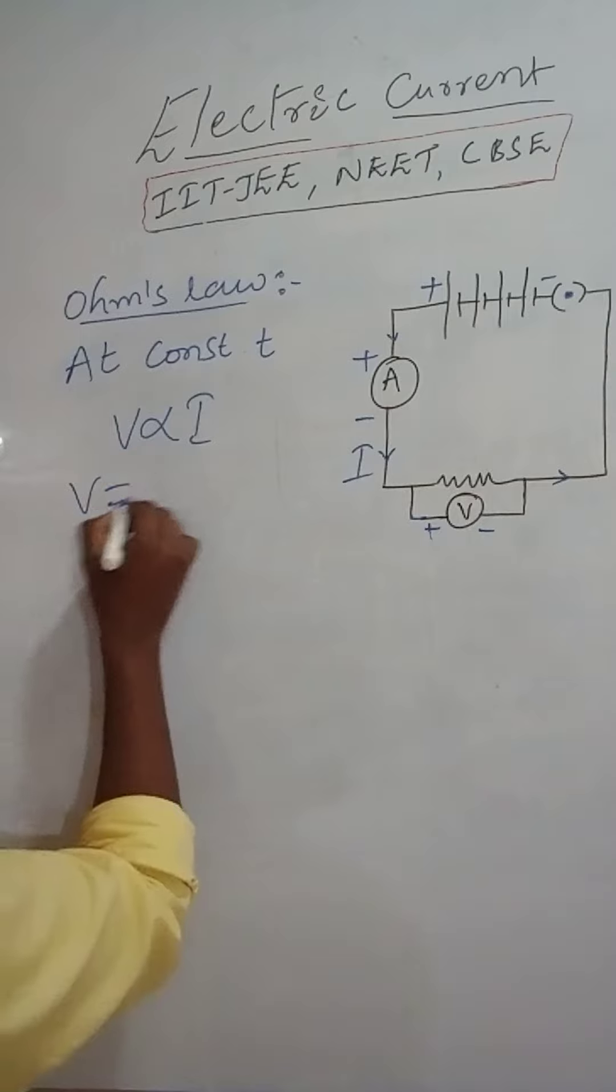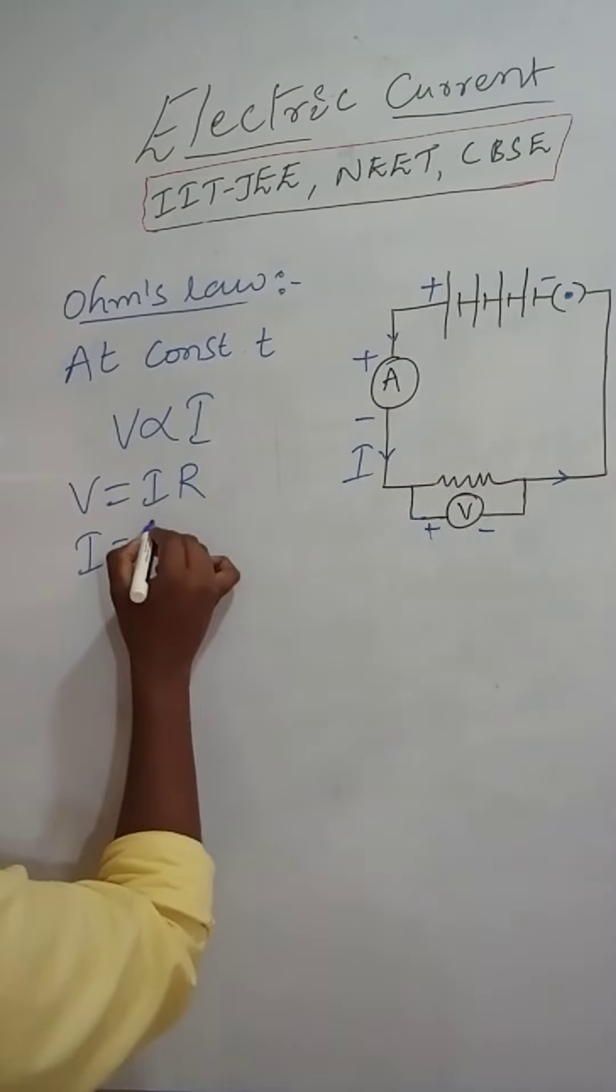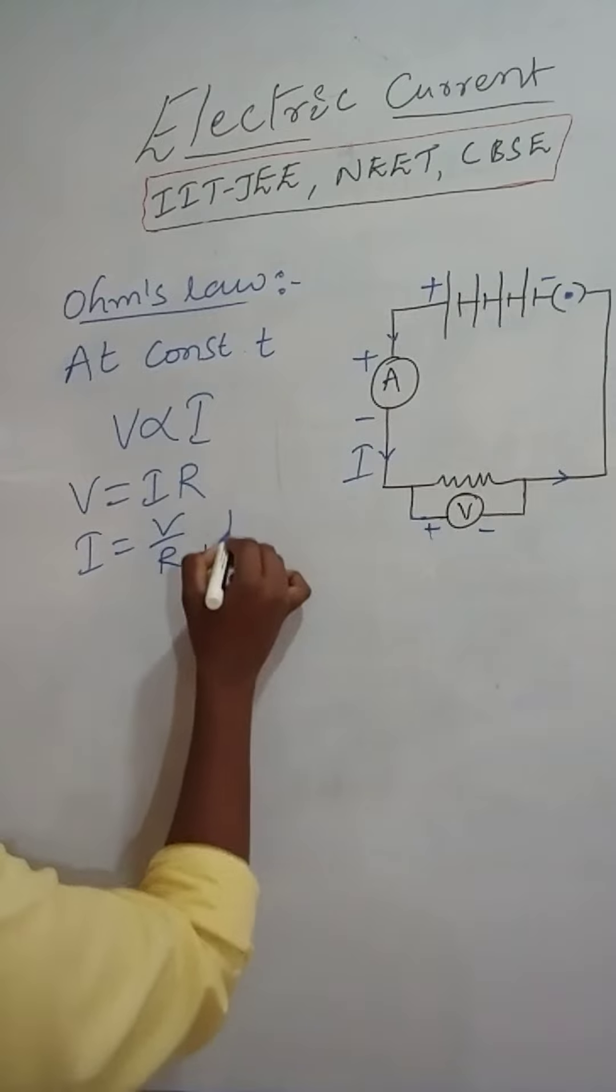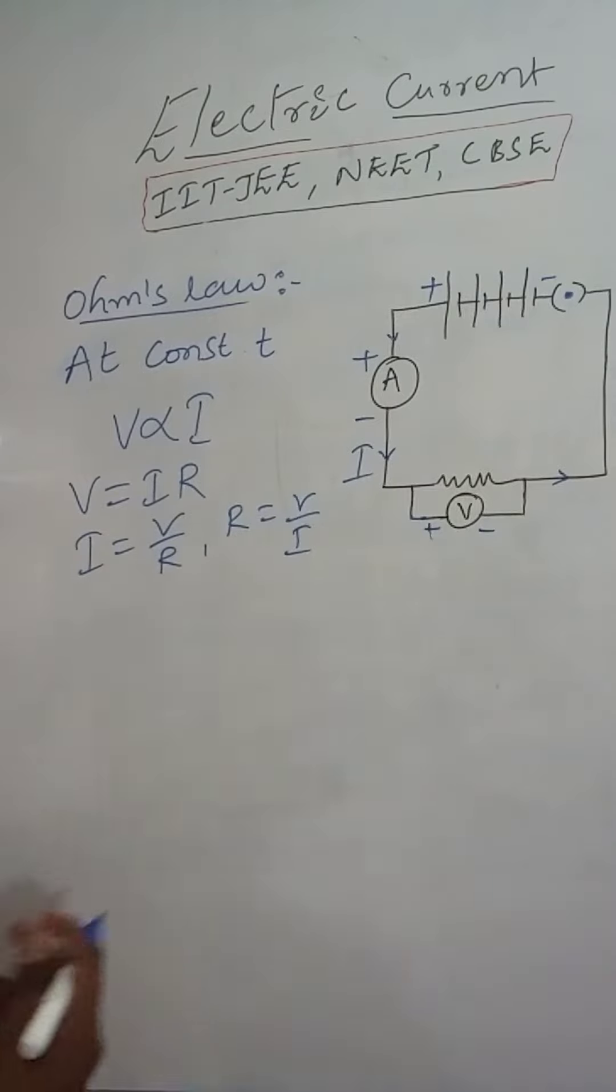So V equal to IR. We can write I equal to V by R, R equal to V by I. Then like that we can consider.